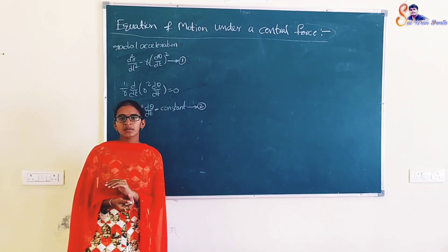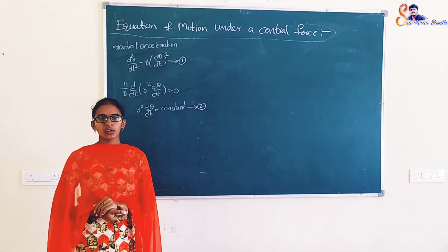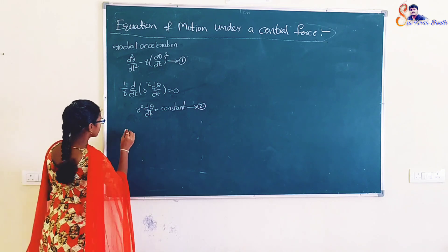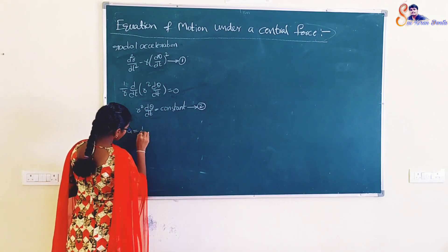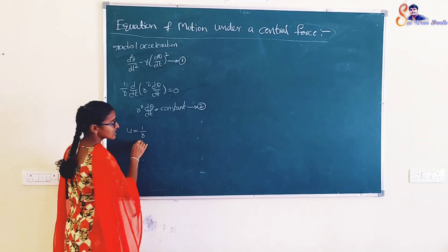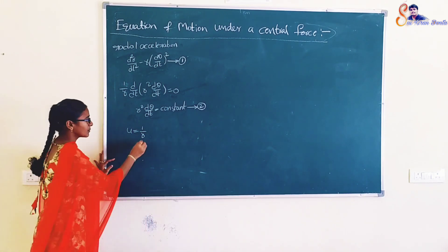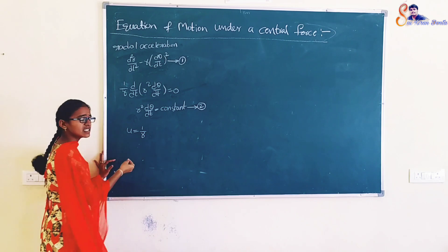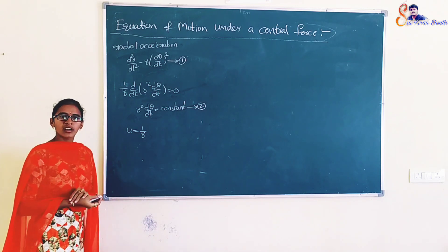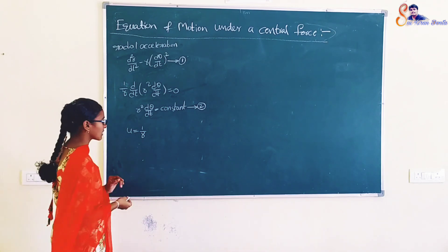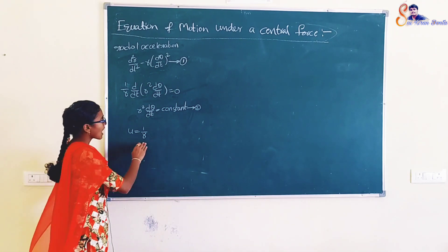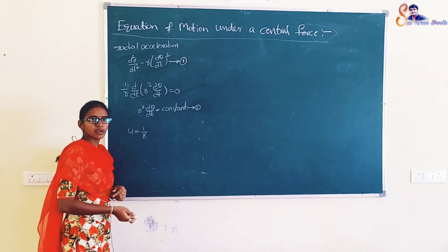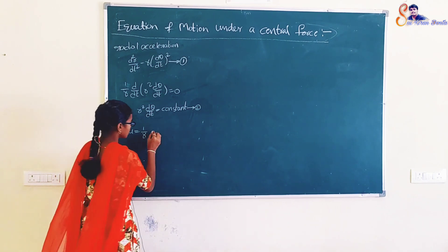Now we substitute a standard notation. U is equal to 1/R, which is called the reciprocal of the radius vector. So U = 1/R, and R = 1/U.